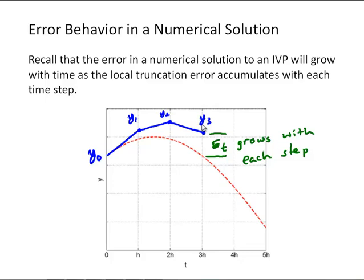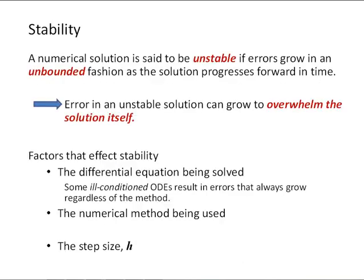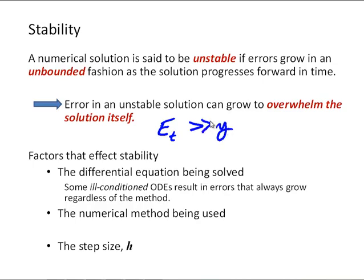Sometimes this error grows really quickly, and that leads us to the idea of stability. A numerical solution is said to be unstable if the errors grow in an unbounded fashion as the solution progresses forward in time. The error in an unstable solution can grow to overwhelm the solution itself — the total error can be greater than y, even much greater than y, such that our numerical solution is worthless. So an unstable solution is no good, and we'd like to avoid that.